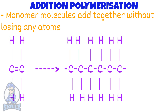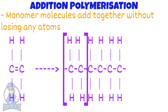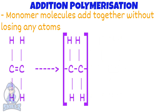Before we move on to uses of polyethene, we are going to have to look at something known as a repeat unit. In this polymer, it is the ethene molecule repeating over and over again, so we call it the repeat unit. When asked to draw a repeat unit, you would show it like this. Keep this in mind.